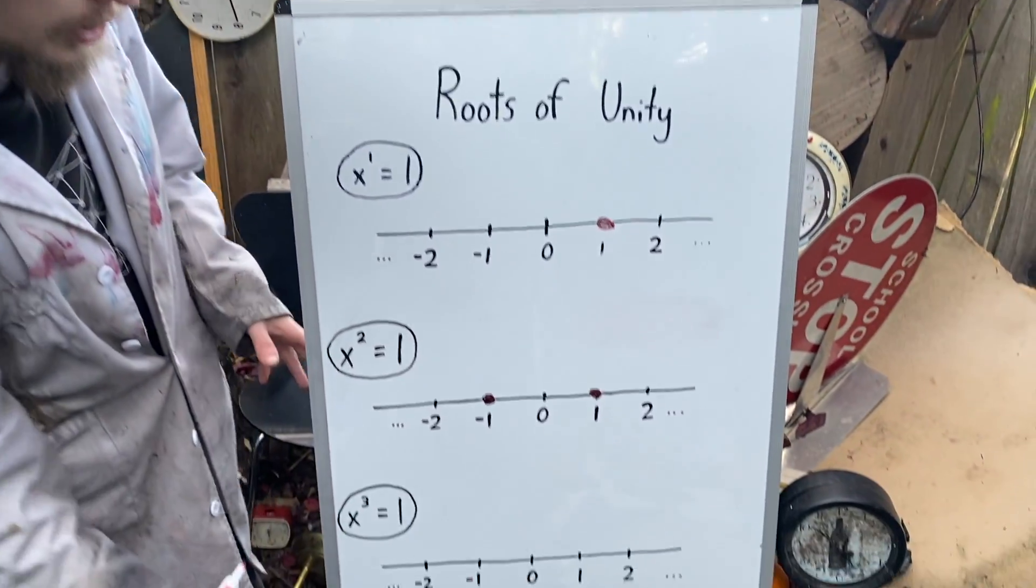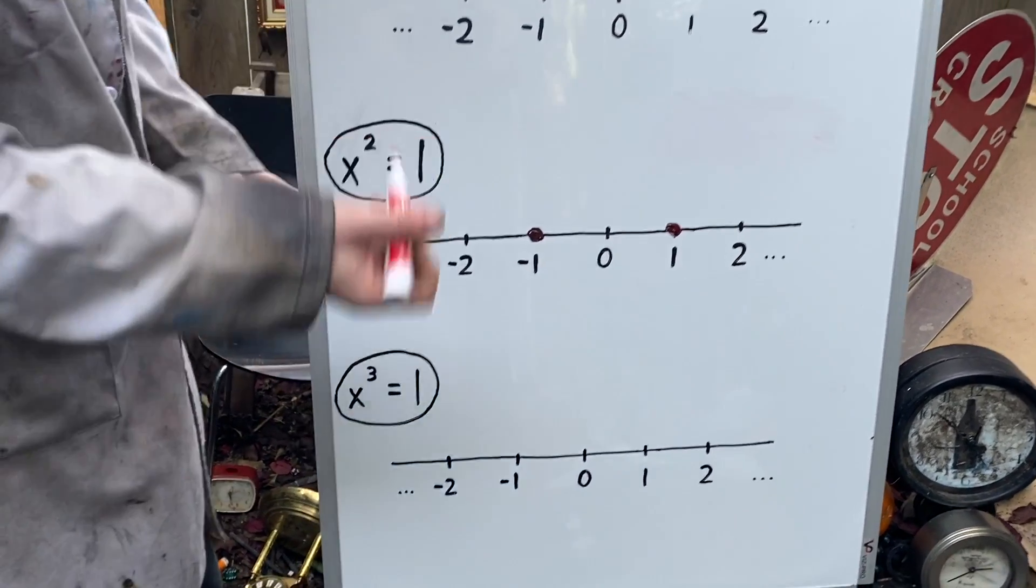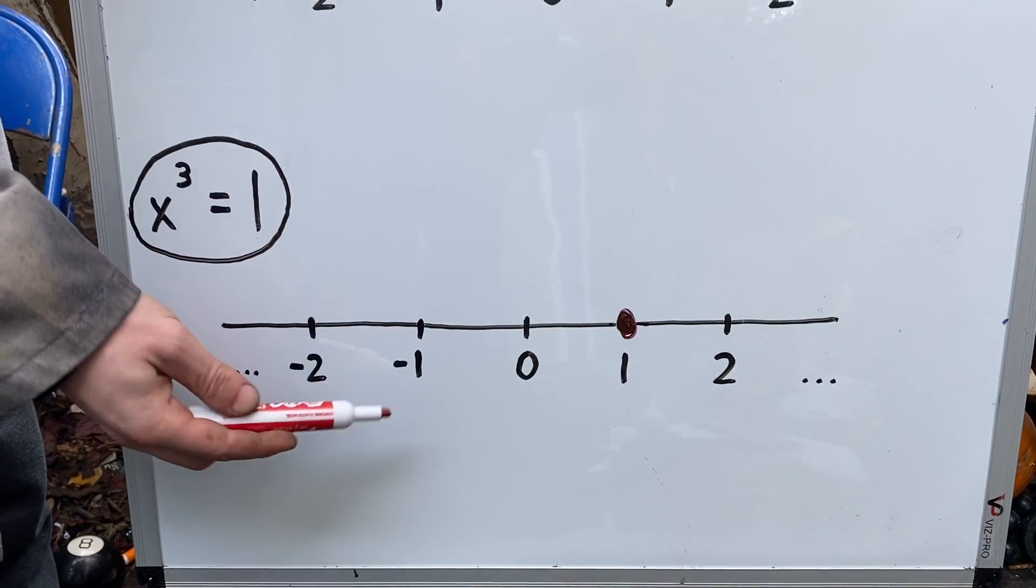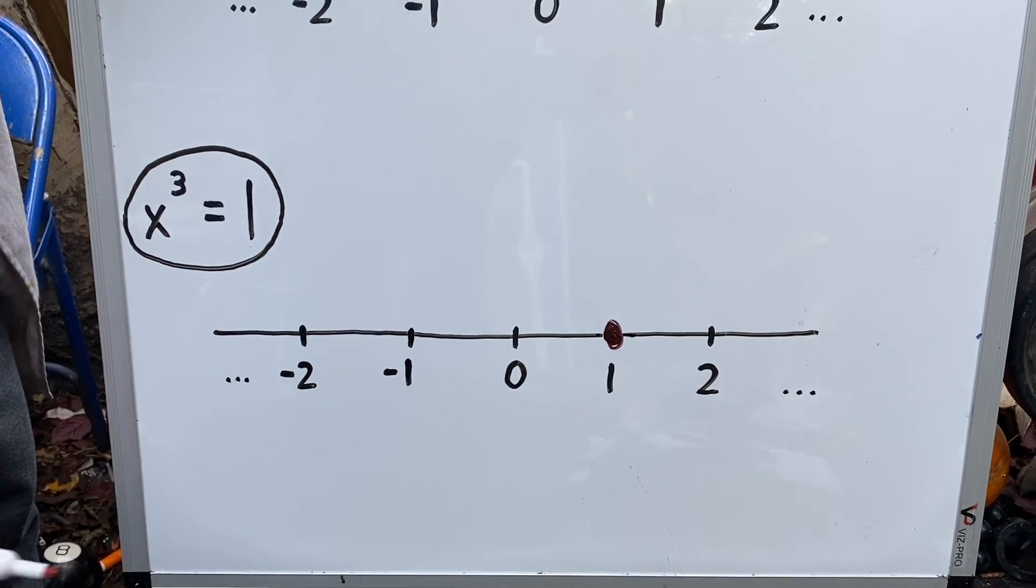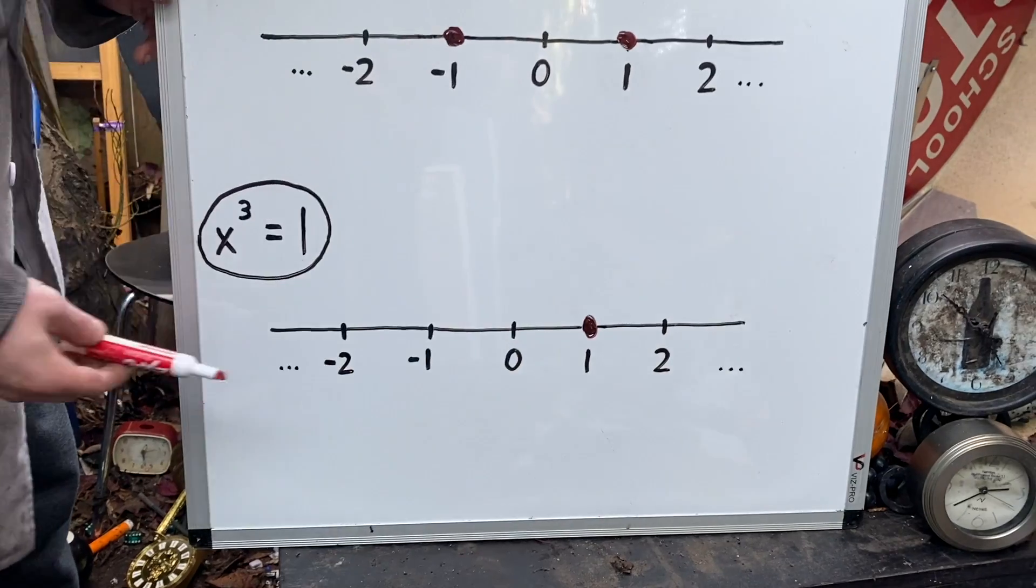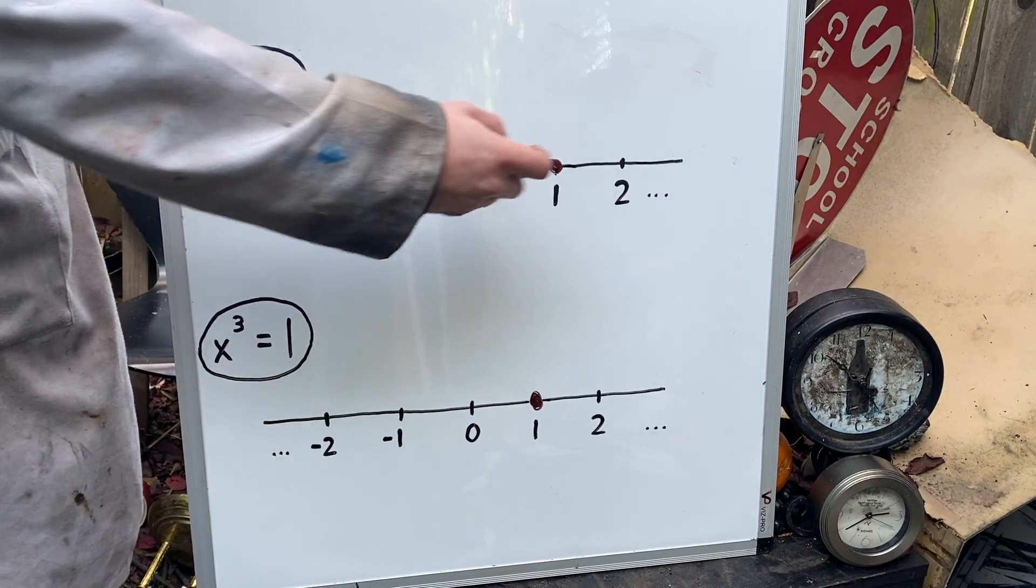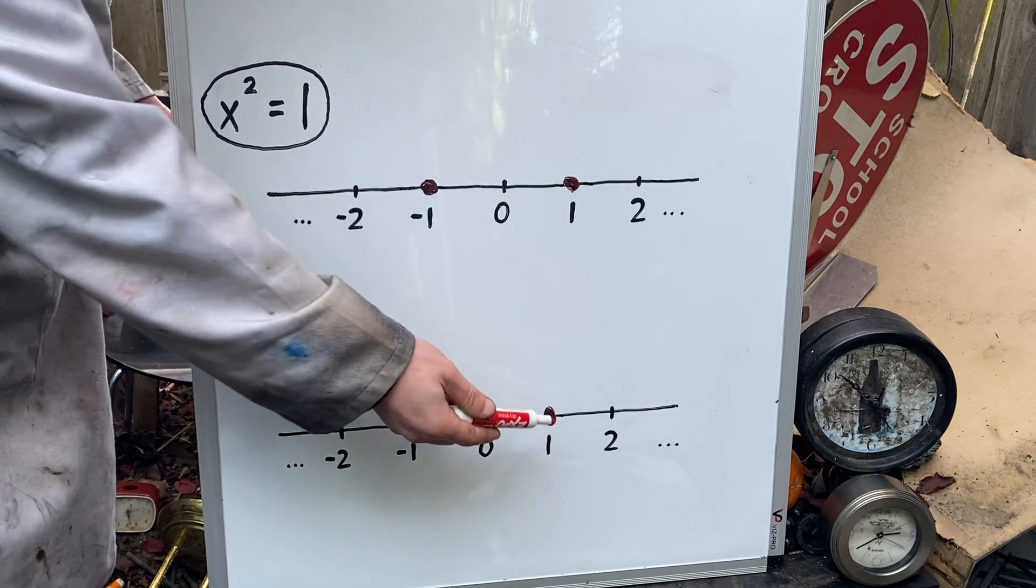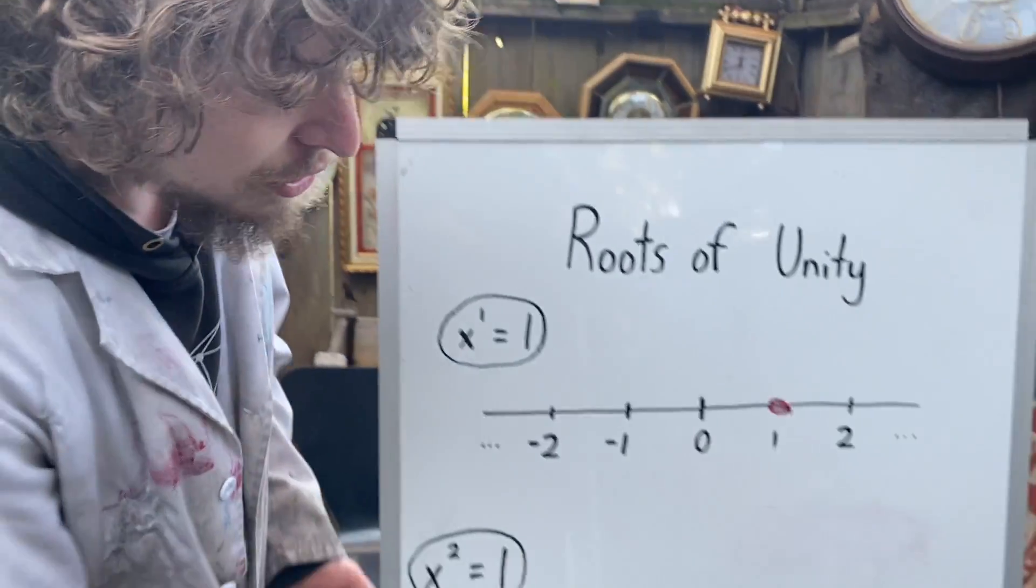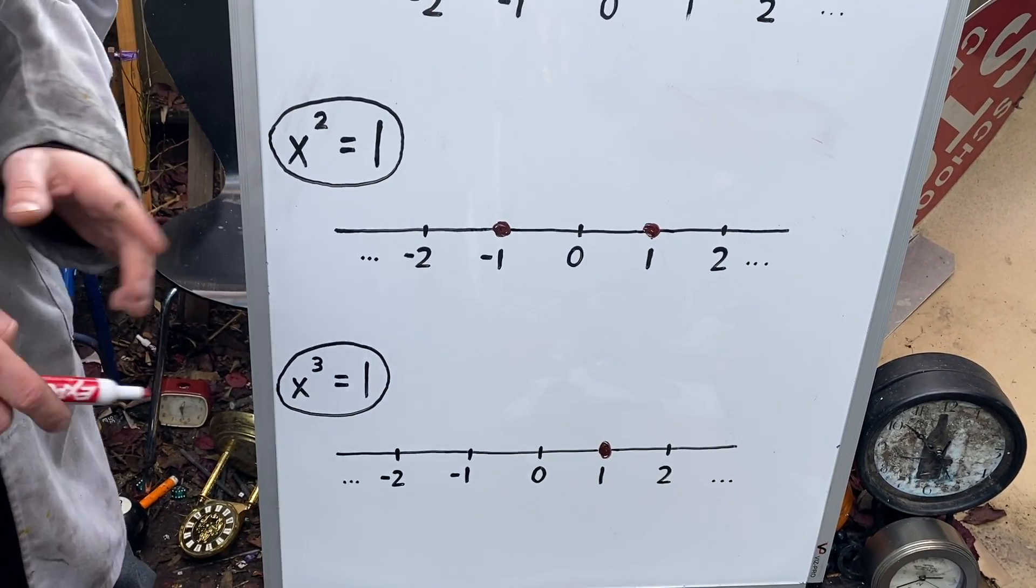But when we go to the third Roots of Unity, asking which numbers x does x cubed equal one, you might only be able to locate one. Because one cubed gives us one, but negative one cubed gives us negative one. And so that's not a cube root of one. On this little stretch of number line right here, it seems like there's only one cube root of unity. Why did it go down from having two for the second power to one for the third power? Well, you might be tempted to say when it's an odd exponent, you get less. And when it's an even exponent, you get more. And that's part of the answer, but there's more to the story.